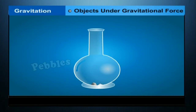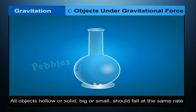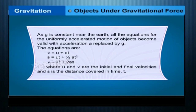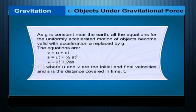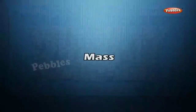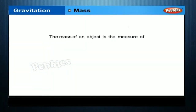An object experiences acceleration during free fall. This acceleration is independent of its mass. This means that all objects — hollow or solid, big or small — should fall at the same rate. Since g is constant near the earth, all the equations for uniformly accelerated motion become valid with acceleration a replaced by g, where u and v are the initial and final velocities and s is the distance covered in time t.